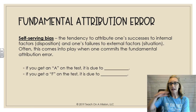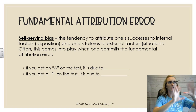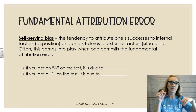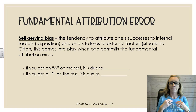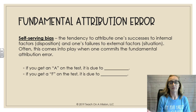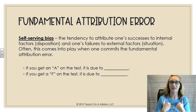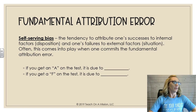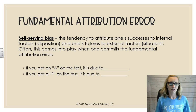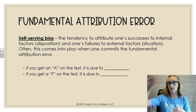Self-serving bias is not really the opposite of fundamental attribution error, but definitely related. It's the tendency to attribute your own successes to internal disposition, but your failures to external or situational factors. If you get an A on the test, it's because you're amazing — dispositional. But if you get an F, it's because your teacher is awful or the AC wasn't working. When you succeed it's because you're amazing; when you fail, it's because of other things.